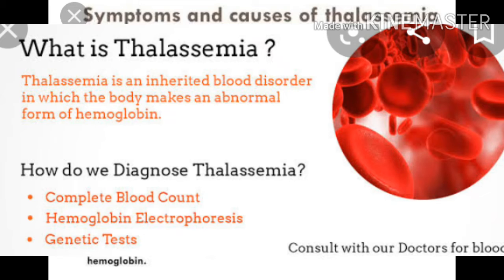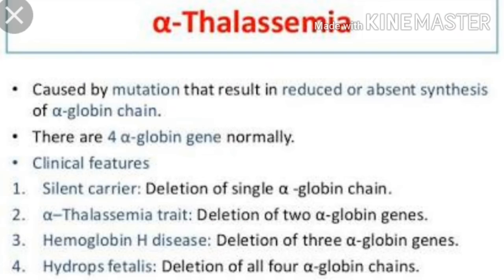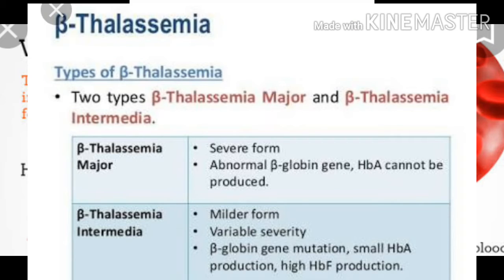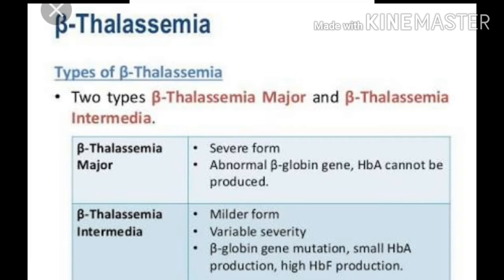In alpha thalassemia, production of the alpha globin chain is affected, while in beta thalassemia, production of the beta globin chain is affected. तो दो तरीके का thalassemia होता है — alpha और beta — जिसमें alpha thalassemia में alpha globin chain affected हो जाती है, जबकि beta thalassemia में beta globin chain affected हो जाती है।